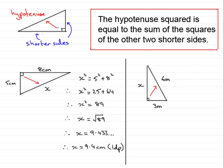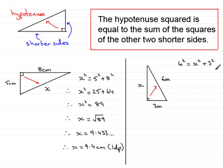According to Pythagoras' theorem, the hypotenuse squared — that's 6 squared — is equal to the sum of the squares of the other two shorter sides. So I can write equals x squared plus 3 squared. You've got to be very careful in this example that you do not start with x squared, because x squared does not equal 6 squared plus 3 squared. All I need to do is rearrange this equation by subtracting 3 squared from both sides. So x squared is equal to 6 squared minus 3 squared.